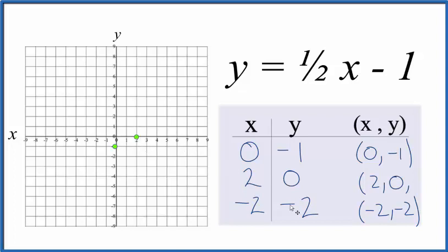And we could just use two points, but I'd like to have three just to make sure I did this part correctly. So we have x is negative two, y is negative two.